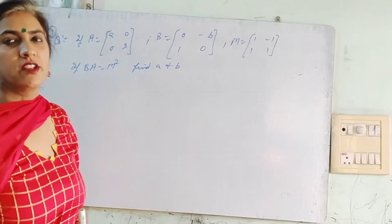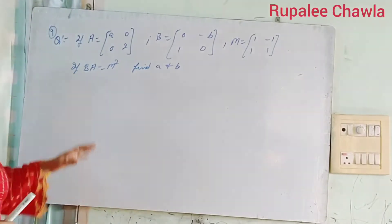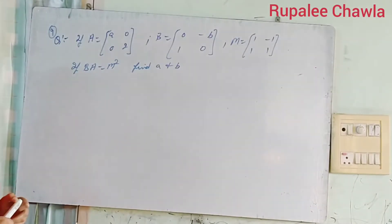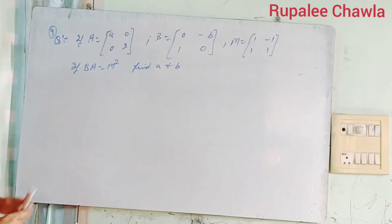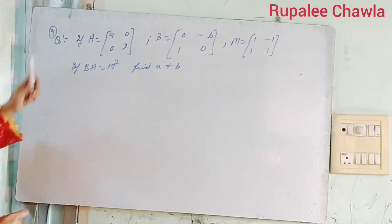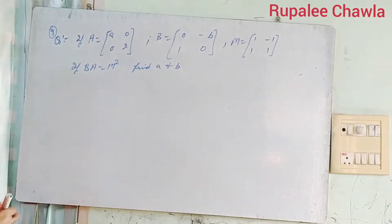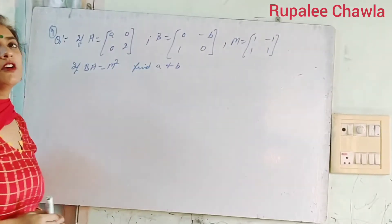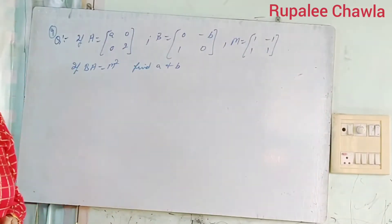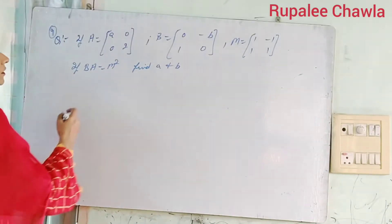Welcome students to my channel the Academy 2020. Today we do some more questions about the matrix multiplication from the book Selina. It is the 9th question, 9c. These questions are very important from a board point of view for ICSE board Class 10th.